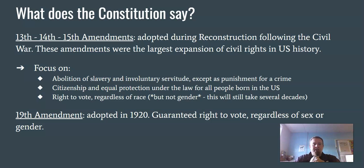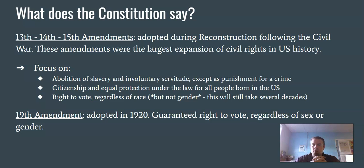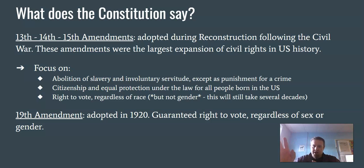Also within the Constitution, outside of the first 10 amendments, there are very important amendments codified into law since then — the 13th, 14th, and 15th amendments, all adopted during Reconstruction following the Civil War. These amendments were the largest expansion of civil rights in U.S. history, focusing on the abolition of slavery and involuntary servitude (except as punishment for a crime), citizenship and equal protection under the law for all people born in the United States, and the right to vote regardless of race.